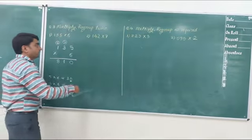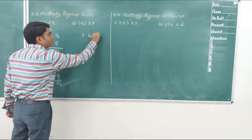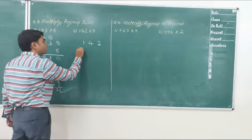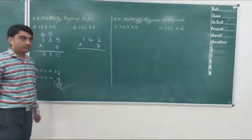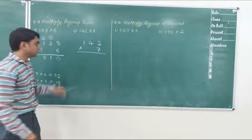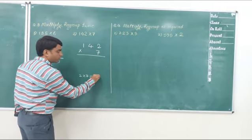Let's solve another example. 142 multiplied by 7. So first we multiply 2 by 7. 7 twos is 14.